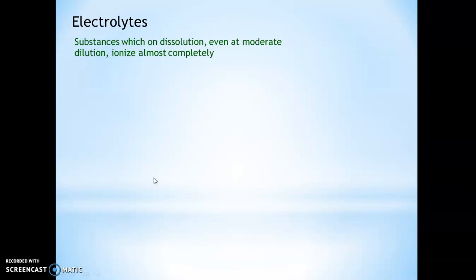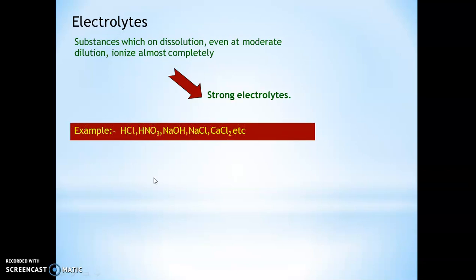As you know, any solid which can conduct electricity is known as a conductor, and which does not conduct electricity is known as an insulator. Similarly, liquids which can conduct electricity are known as electrolytes, and those which cannot conduct electricity are known as non-electrolytes. Electrolytes are basically of two types: strong electrolytes and weak electrolytes.